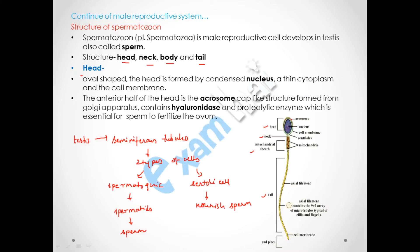The head is oval-shaped and contains the nucleus, which has thin cytoplasm and is surrounded by a cell membrane. The anterior half of the head has an acrosome, which is a cap-like structure formed from the Golgi apparatus.